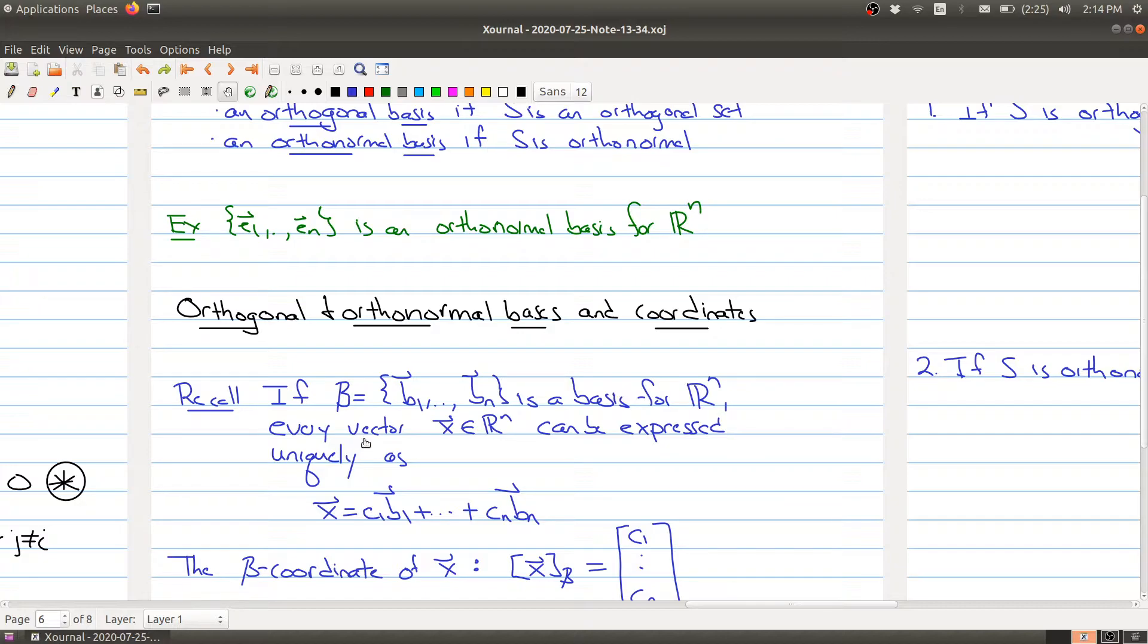Just recall from one of the last lectures that once you have a basis for R^n, you can write every vector uniquely in terms of that basis. That means there are unique constants c₁ through cₙ that when you multiply by the first basis element plus c₂ times the second basis element and so on, you get x. The cᵢ's connected with the bᵢ's give you a way of building your vector x, and it's the only way to build that vector x using the bᵢ's.